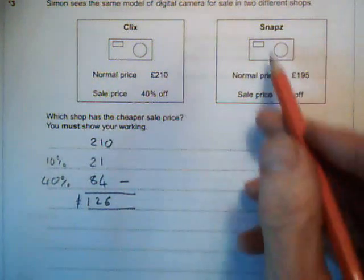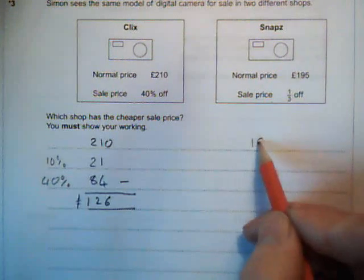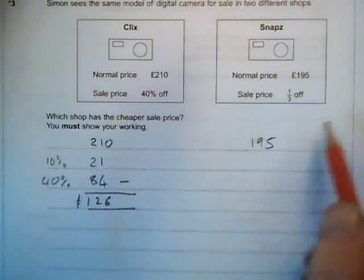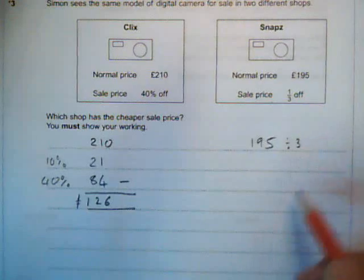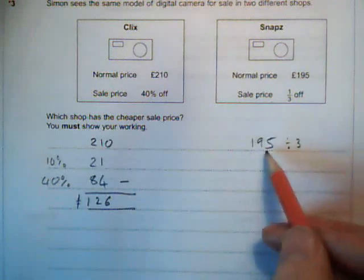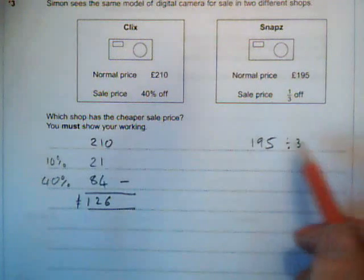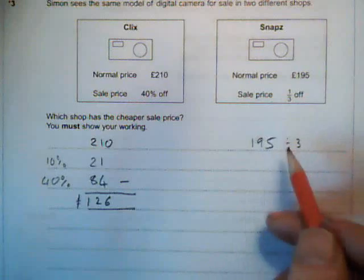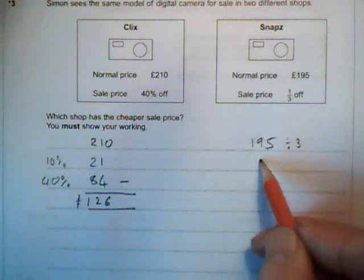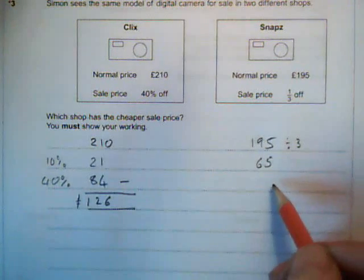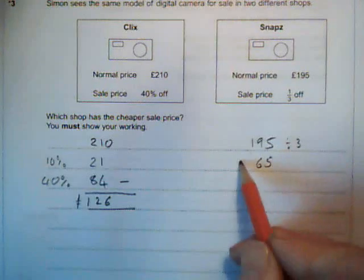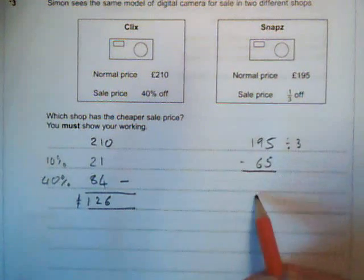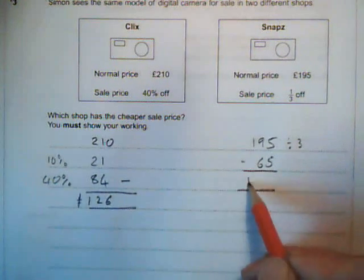Sale price. Going over to Snaps, starting at £195, a third off, so that means we need to divide by 3. 3 into 195 — you should be able to find out that 195 divided by 3 is 65. Then you take that away and you get £130.